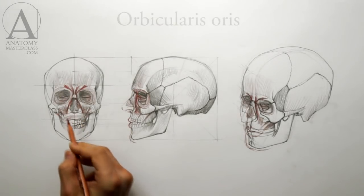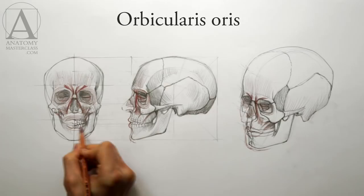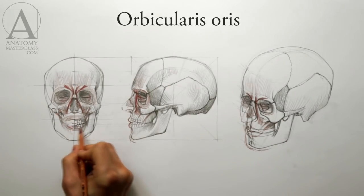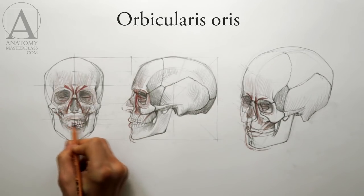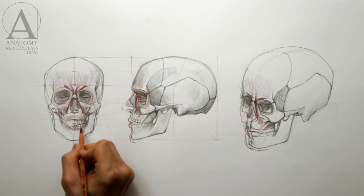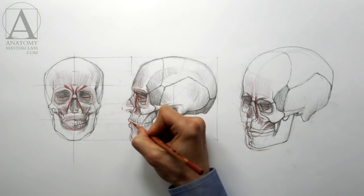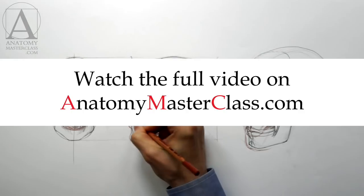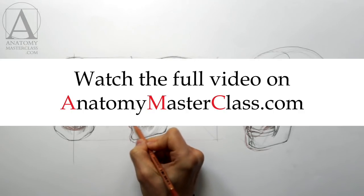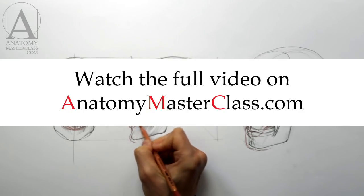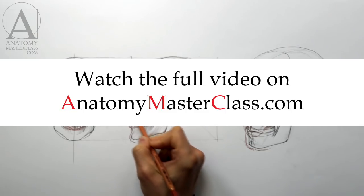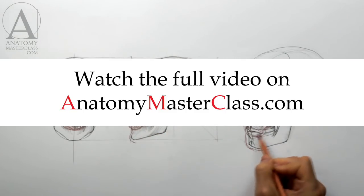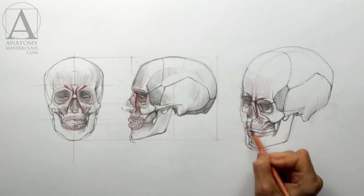The primary mouth muscle is called the orbicularis oris. It has an oval shape and goes around the mouth, forming the lips. The main action of this muscle is to close the lips. Many other muscles intervene with this mouth muscle. Together, they move the mouth into different positions and contribute to lip movements and speech.